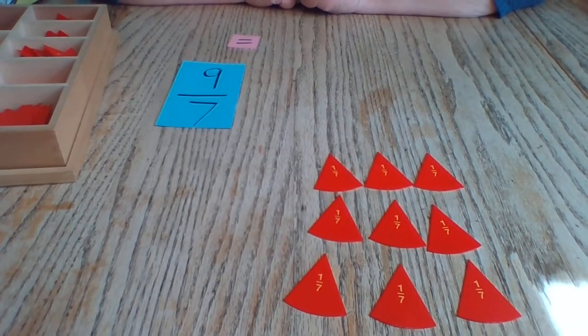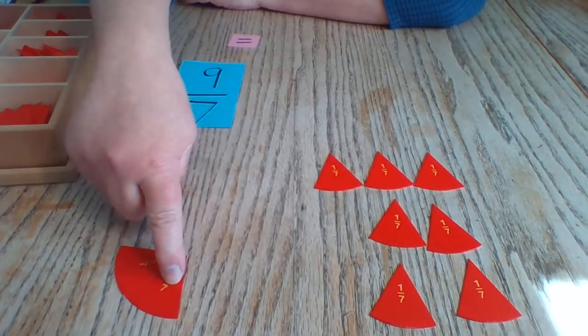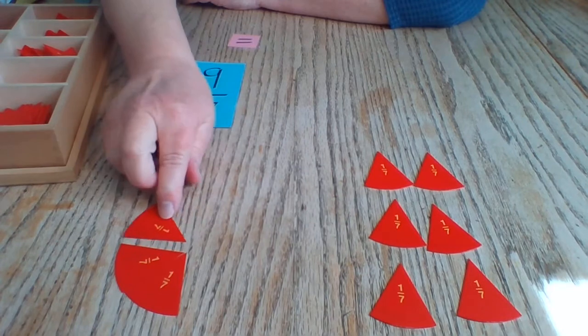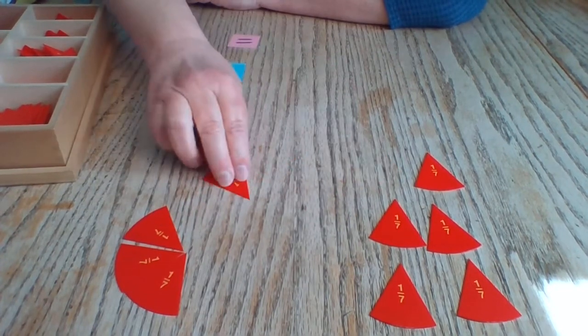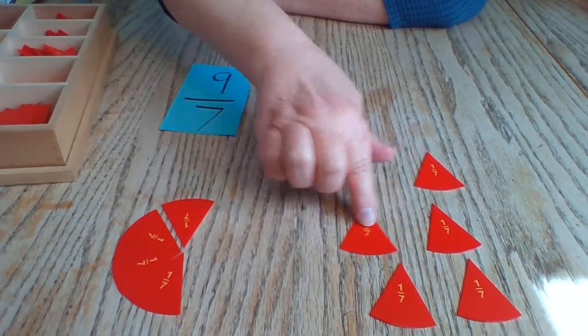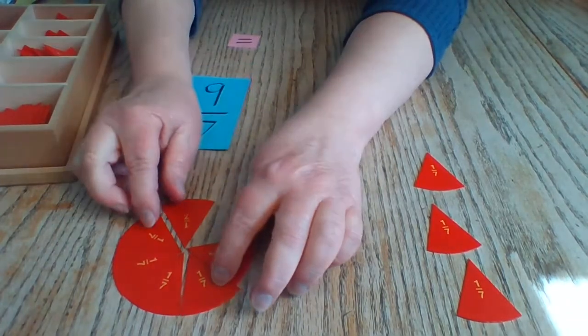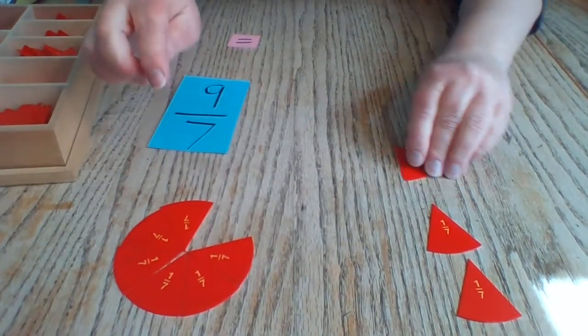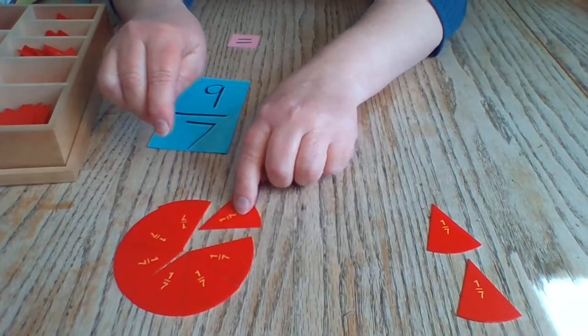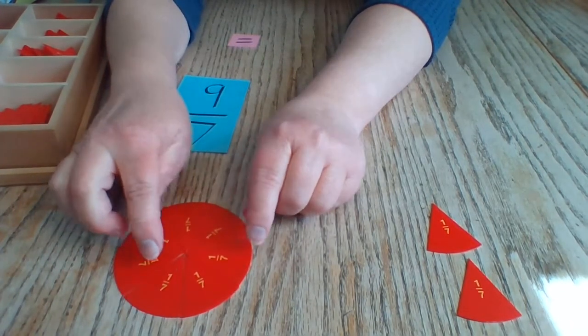Let's see how that works with sevenths. Can you make a whole out of these sevenths? Let's try. Let's see if we can get one whole number out of there. There's one, two, three, four, five, six, and seven. Seven-sevenths is the same as one whole.